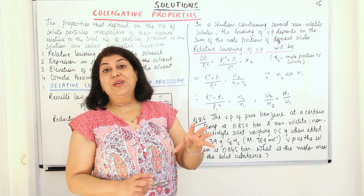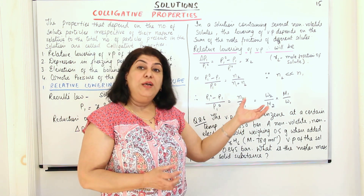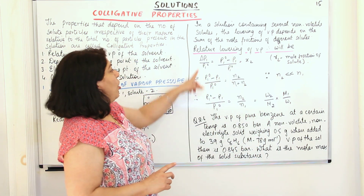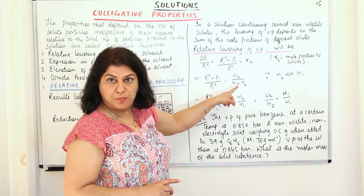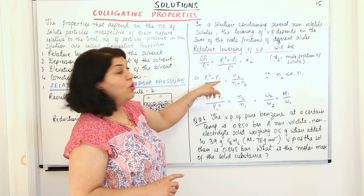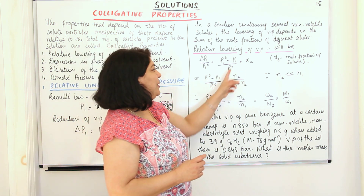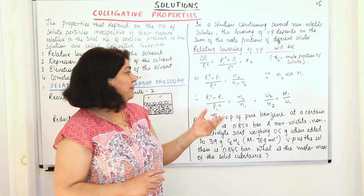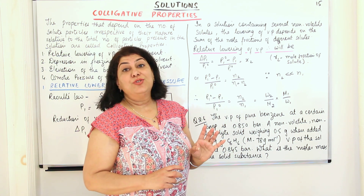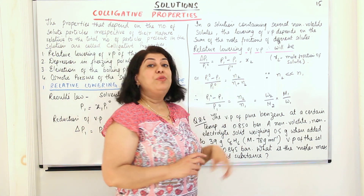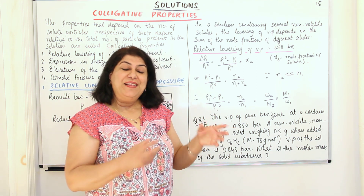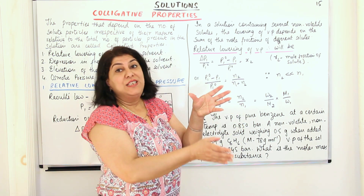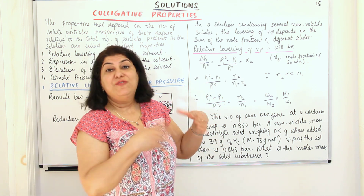Now, x2 is the mole fraction of component 2, the solute. So P1⁰ minus P1 upon P1⁰ equals the mole fraction of the solute, which we write as the number of moles of solute divided by the number of moles of solute plus solvent: N2 upon N1 plus N2. The number of moles of any substance is calculated as mass divided by molar mass.